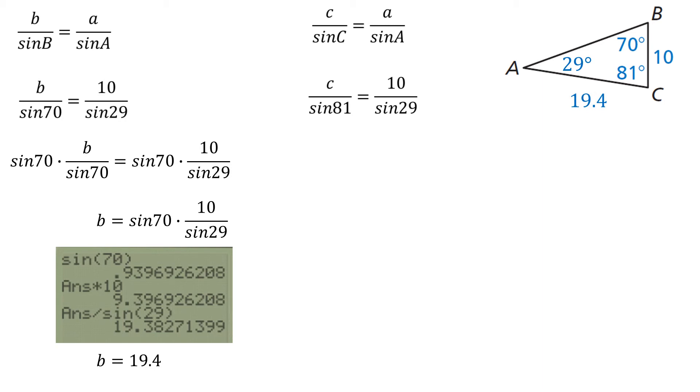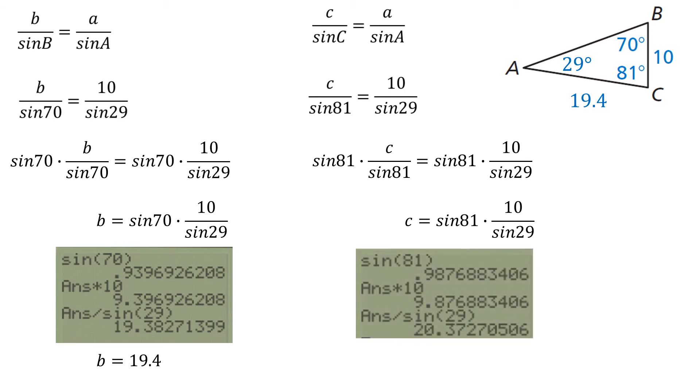Now, to solve for side C, I do not want sine of 81 degrees in the denominator. So let's multiply both sides by the sine of 81 degrees. Now C is isolated. Grab a calculator. Push buttons in the correct order. And say, aha, if I'm going to round the nearest tenth, I better come up with 20.4. And there we have another solved triangle.